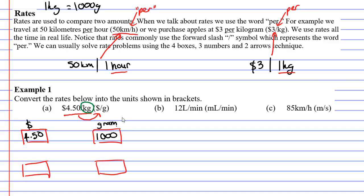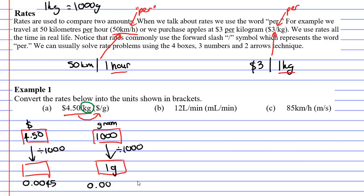Remembering that the key is to make sure the units on the right side of the forward slash have an amount of one, I'm going to convert the thousand into one by dividing it by a thousand. A thousand divided by a thousand equals one — in this case, one gram. Because I did that on the right, I need to do that on the left. I've got to divide $4.50 by 1,000, which gives me 0.0045. So our solution is $0.0045 per gram.